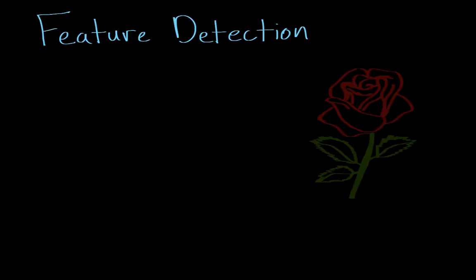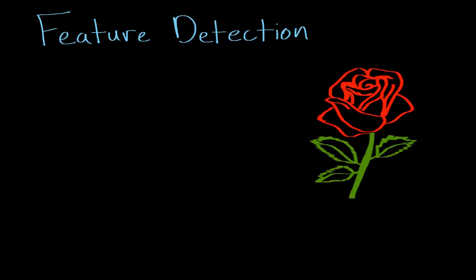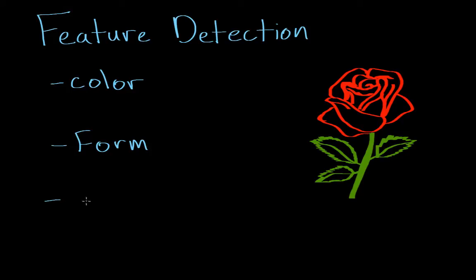When you're looking at a rose, not only do you have to look and decide what color you're looking at, you also have to figure out what shape the rose is — so you have to get information about the form of the rose. You also need to get information about motion: is the rose moving? So whenever we look at any object, we need to get information about color, form, and motion.